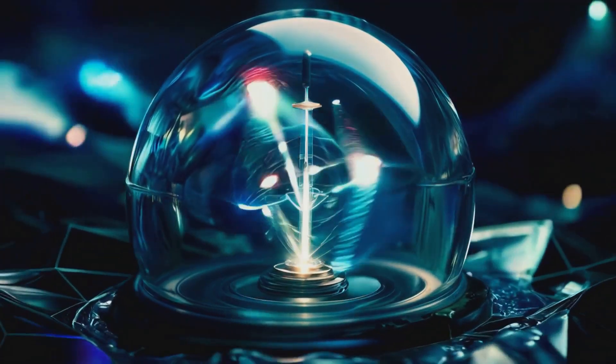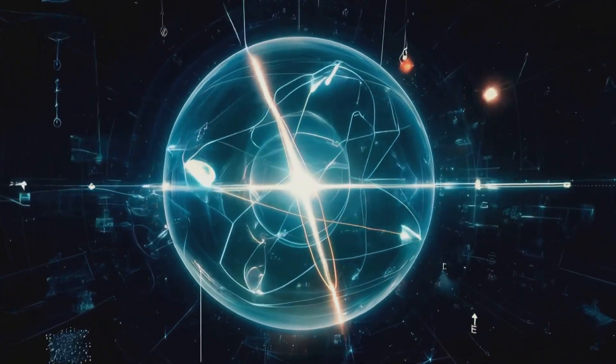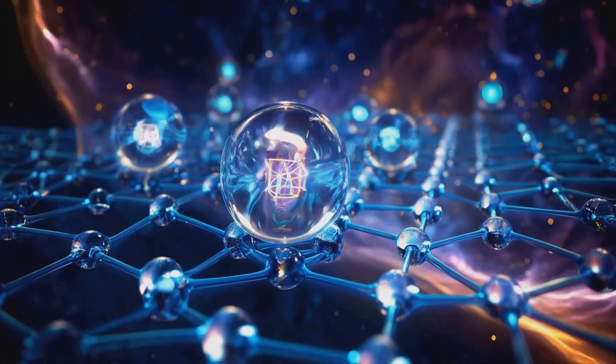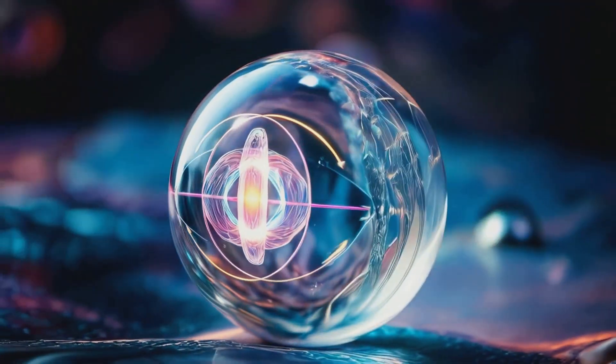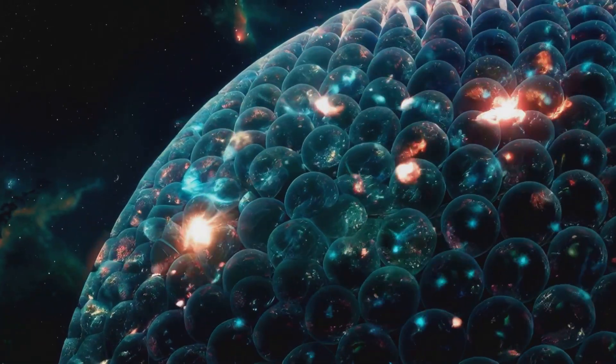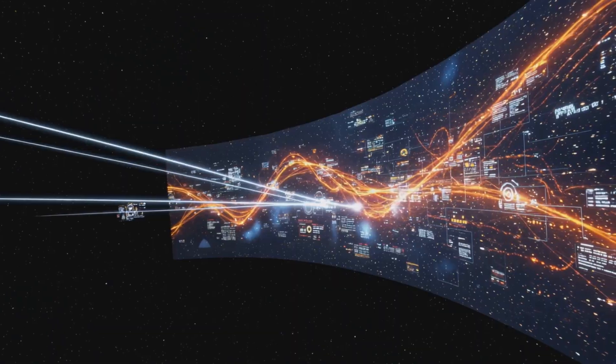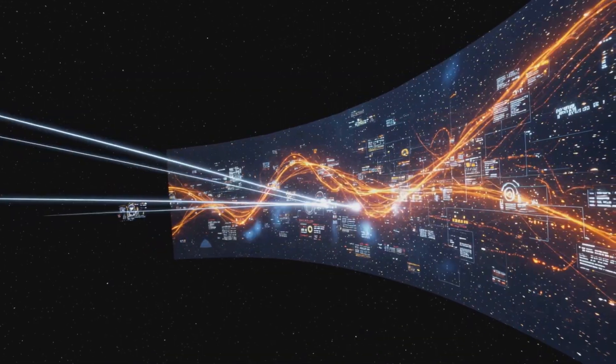Reality as we see it is a holographic projection. Every Bloch sphere is like a pixel in the fabric of spacetime, each one projecting quantum state vectors encoded with information. Together, these spheres form a holographic lattice, where interference patterns give rise to the geometry of space and time.